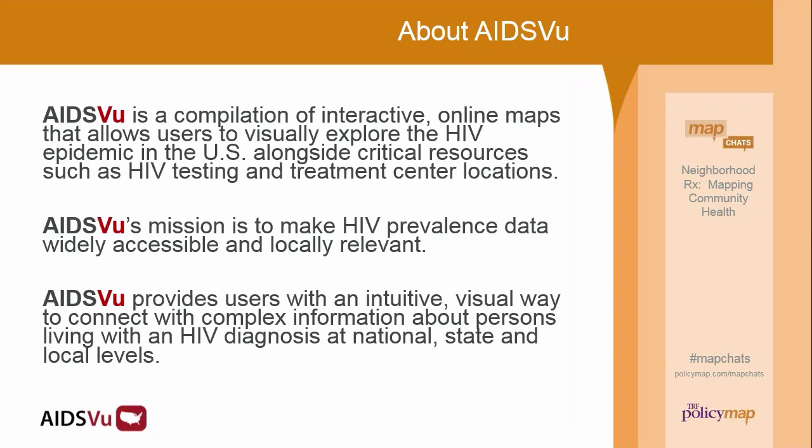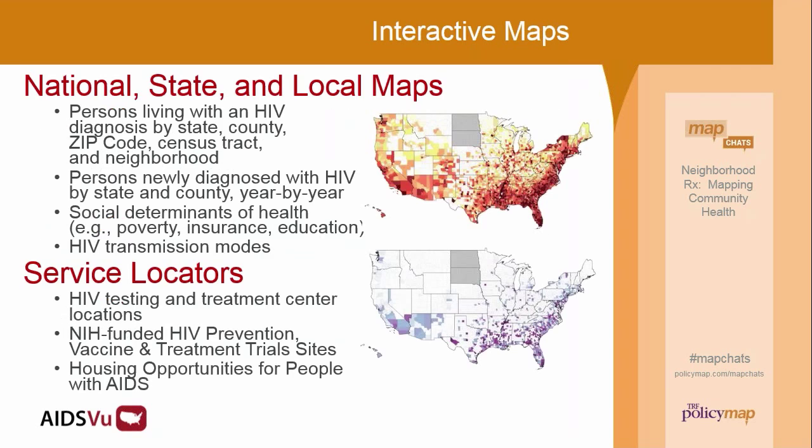AIDSVu.org is a compilation of interactive online maps aimed at letting people visually explore the HIV epidemic in the U.S., putting alongside information about where HIV is occurring other critical resources like HIV testing and finding places to get treated. Our goal is to take these data, which in table format may be less relatable to people, and make them widely accessible and locally relevant. It's one thing to understand in a national sense where the epidemic is, but we also want to know what it looks like in the place where you live. We try to provide users an intuitive visual way to connect with this complex information at a variety of different geographic levels.